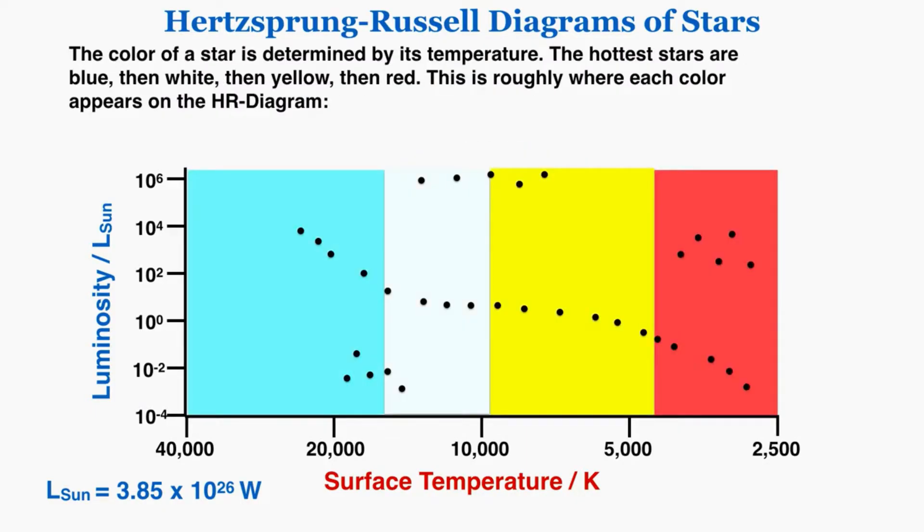The color of a star is determined by its temperature. The hottest stars are blue, then white, then yellow, then red, and this is roughly where each color appears on the HR diagram. Stars with a temperature of roughly 10,000 to 5,000 Kelvin appear as yellow, from about 13,000 to 10,000 they appear as white, from 40,000 to 20,000 it's blue, and from less than 5,000 those stars appear as red. If a dot falls within that color band, that star literally is that color in the sky.